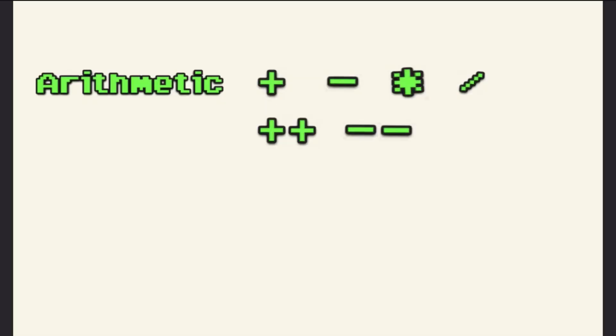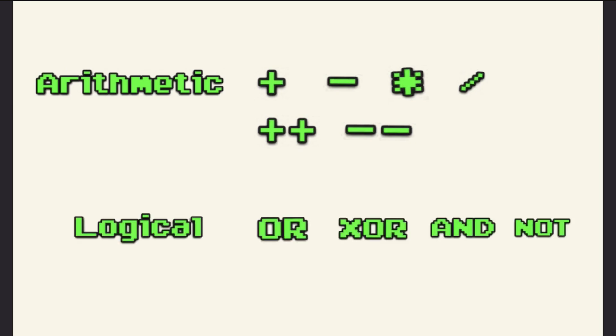Besides addition and subtraction, the ALU performs other arithmetic operations like multiplication, division, increment, and decrement. The ALU also performs logical operations. There are 4 fundamental logical operations: OR, XOR, AND, and NOT.